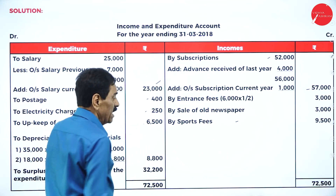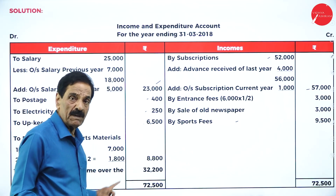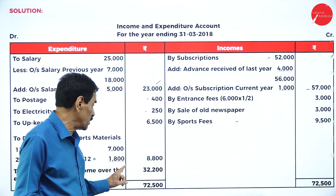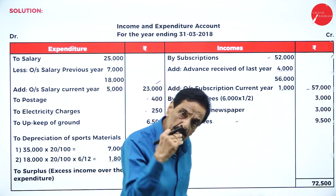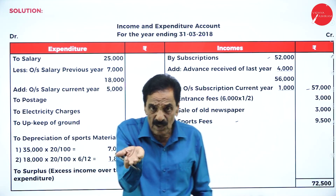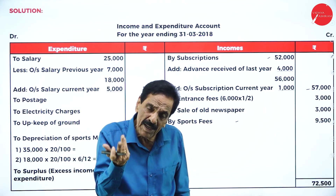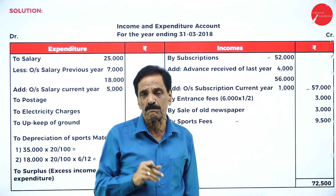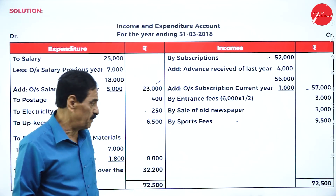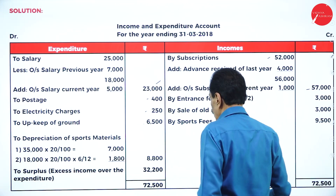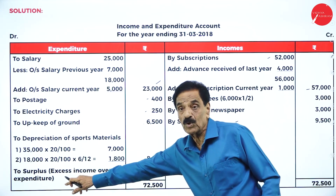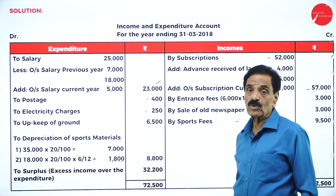Total expenditure is calculated. Income is more than expenditure, so the excess of income over expenditure is called surplus — similar to net profit. The surplus is 32,200.